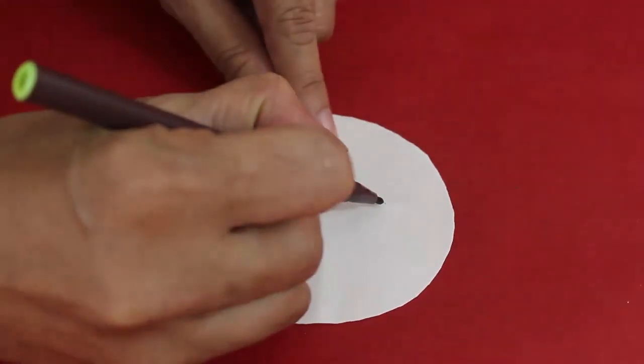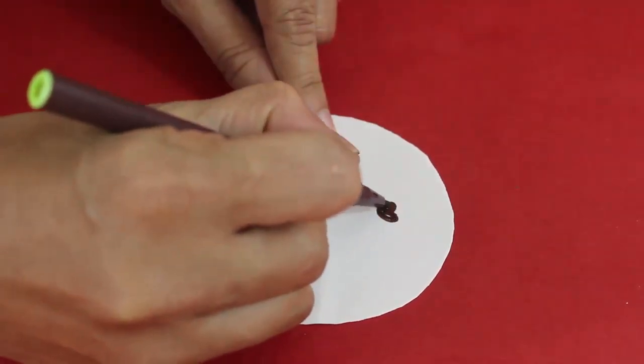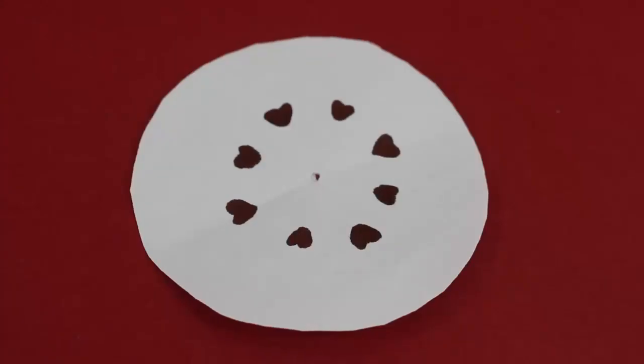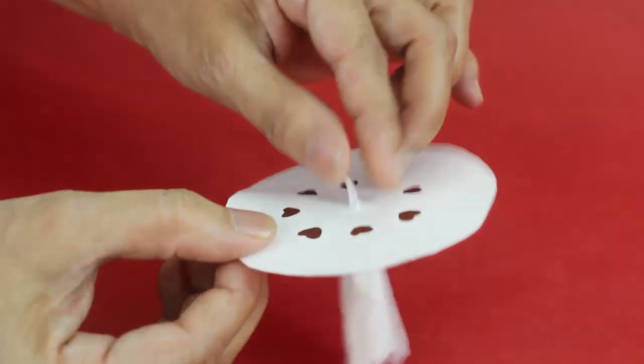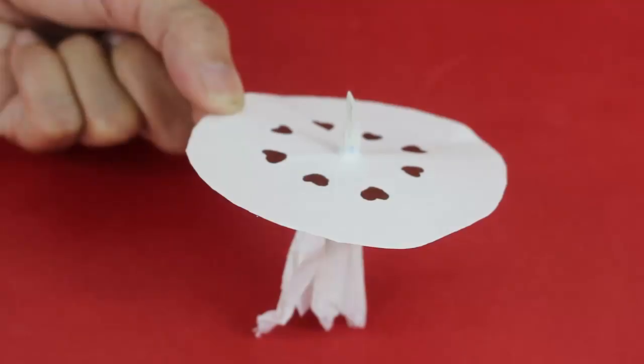Cut a circle with filter paper and make a hole at the center using a pair of scissors. Draw marks on this circle using brown sketch pen. Take a piece of tissue paper and make a tapering shape as shown and insert it in the filter paper.